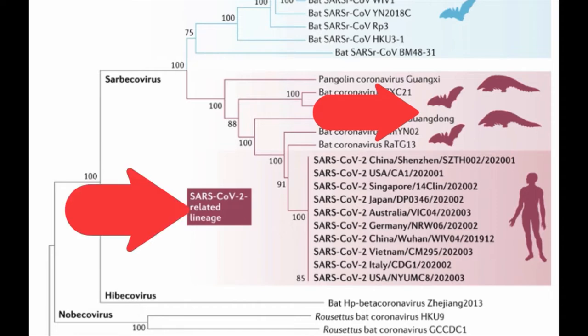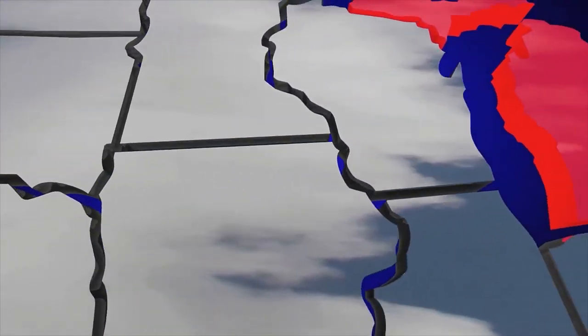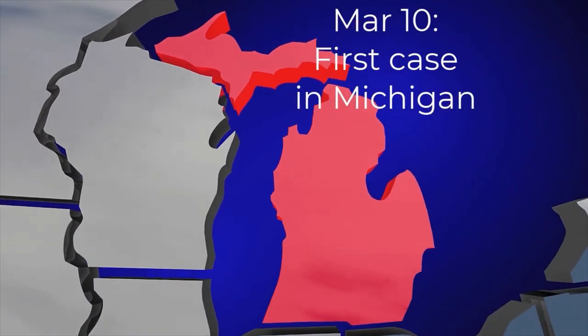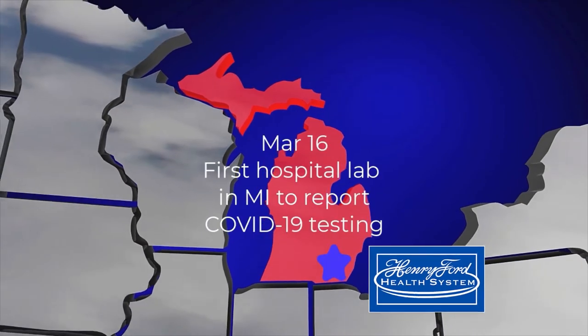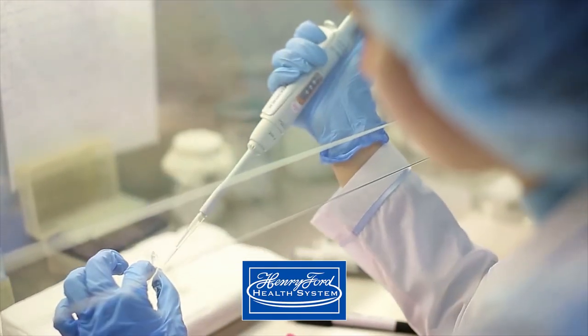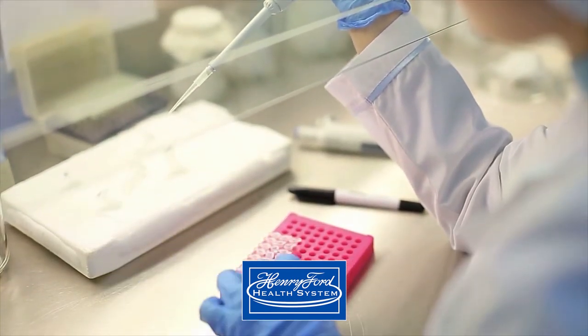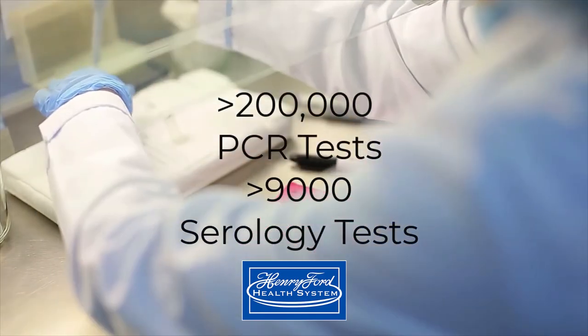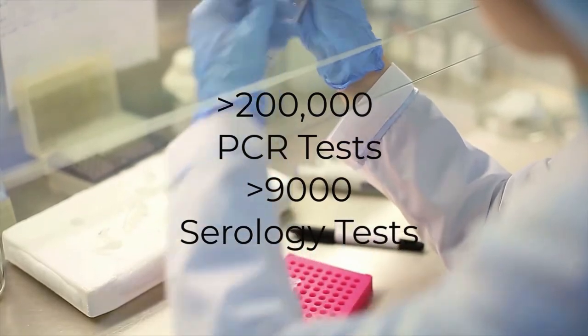In the United States, the first case of COVID-19 was confirmed on January 20, 2020. In Michigan, the first case was confirmed on March 10, 2020. On March 16, 2020, our clinical microbiology laboratory was the first laboratory in Michigan to offer clinical testing for COVID-19. Within eight months, our laboratories have now performed over 200,000 COVID-19 PCR tests and over 9,000 COVID-19 serology tests.